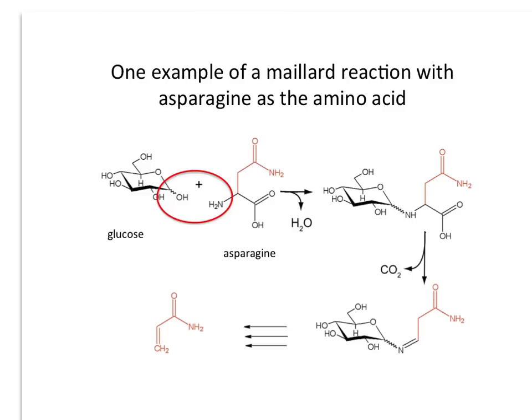So in lecture this week, we talked about the Maillard reaction. And we learned that this is a set of reactions that happen in cooking when we do things like saute onions or bake cookies or bake breads or fry up a steak.